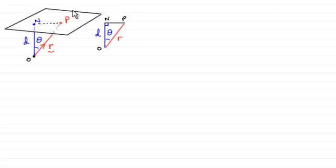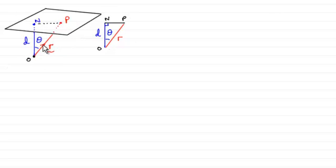We can define a unique plane in space if we know that from a fixed origin the perpendicular distance O to N is given — let's say we call it D. Then any point on the plane, say P, is given by position vector R. And if we let the angle NOP equal theta, then as P moves around on the surface of the plane, the length of R will change and the angle theta will change, but D will always remain constant.